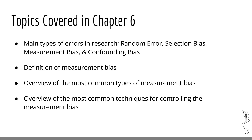So what is on the agenda for Chapter 6? We are going to start off with a refresher of the major types of errors in research. Then we are going to introduce and define the measurement bias. Next, we will talk about the most common types of measurement bias that you need to know. Then we will finish off with an overview of the most common techniques for controlling the measurement bias.